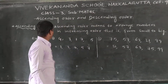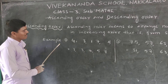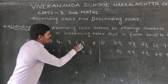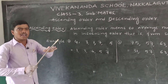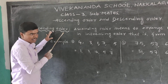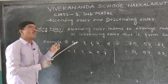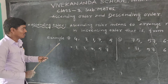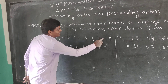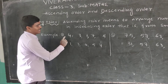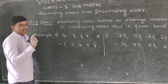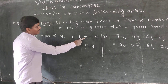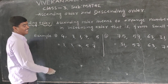Now here is the first example. The numbers are 4, 3, 1, 7, 5. Arrange the numbers in ascending order — that is small to big. First, find out the smallest number. Here we have 4, 3, 1, 7, 5. The smallest number is 1.